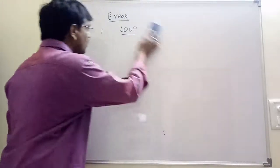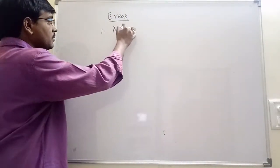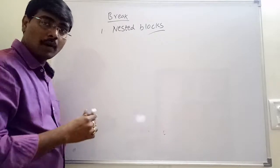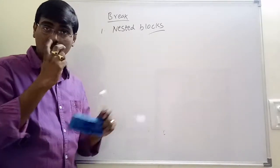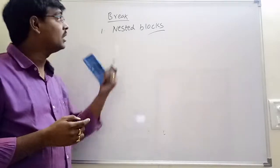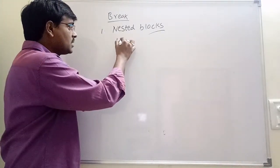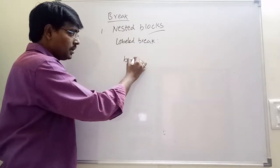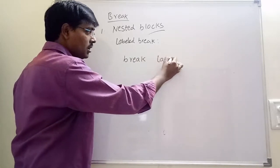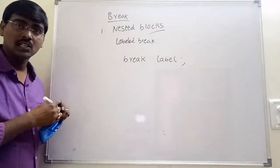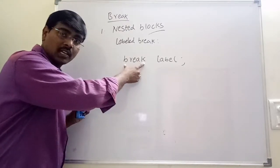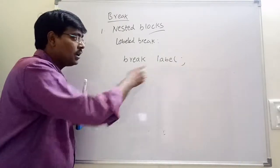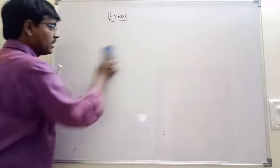The third use is nested blocks — one block placed within another block. To come out of these blocks, we use a labeled break. The syntax is simply: break someLabel. Whenever a condition is satisfied, we execute break and it breaks execution up to that label.